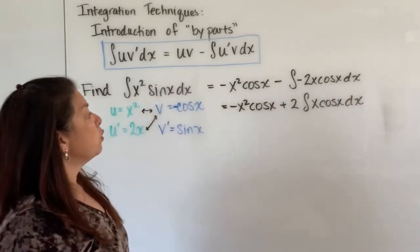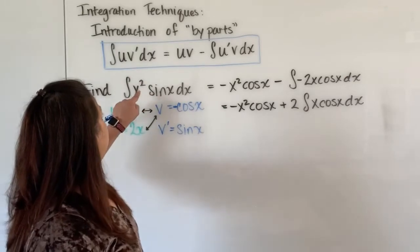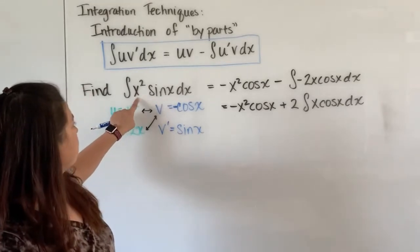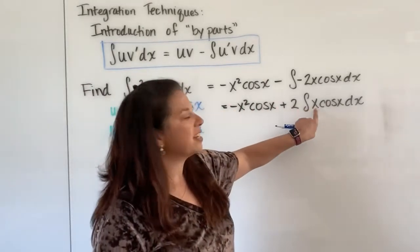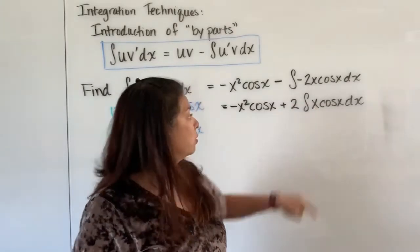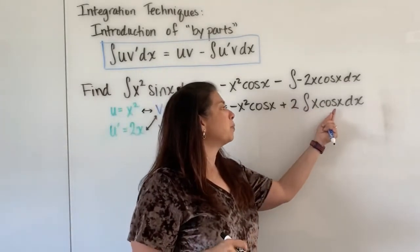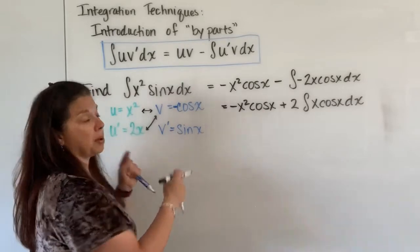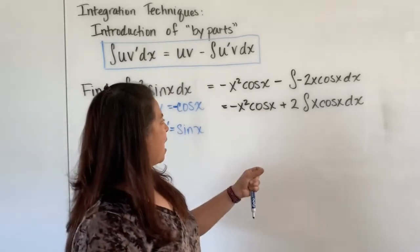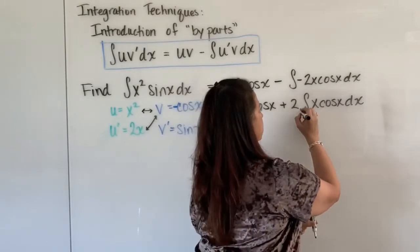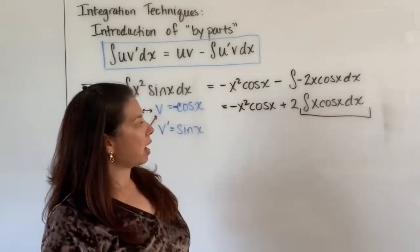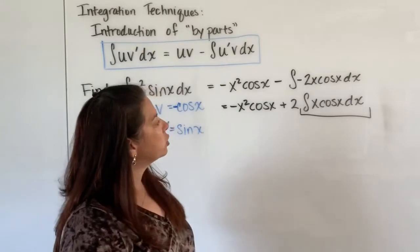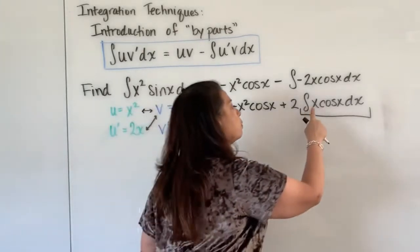Okay so the good news is I have at least gone down in terms of my power of that first function u that was in front. I started with an x squared and this here I now have just an x so that's good news. The bad news is I still have another product that I have to deal with and that involves yet another by parts structure to this so now I have to think about for this piece right here I have to figure out what all the parts are and put that piece into a part structure in the formula to finish off finding the integral.